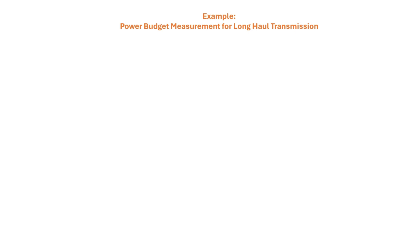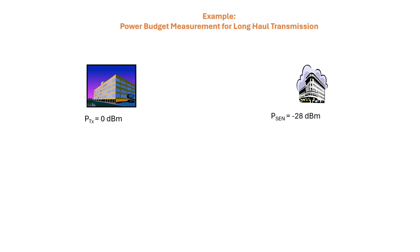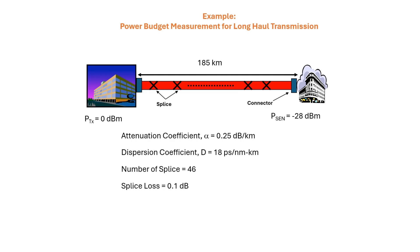This example is on power budget measurement for long haul transmission. The transmitted power is 0 dBm. Receiver sensitivity is minus 28 dBm. The distance between transmitter and receiver is 185 km. Attenuation coefficient alpha is 0.25 dB per kilometer. Dispersion coefficient D is 18 picosecond per nanometer-kilometer. Number of splices is 46. Splice loss is 0.1 dB. Connector loss is 0.2 dB. These are the given data.